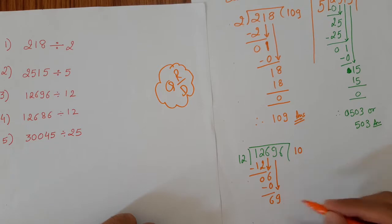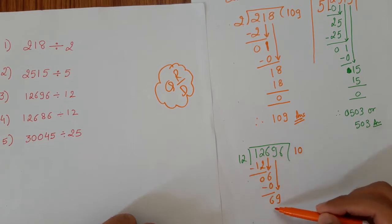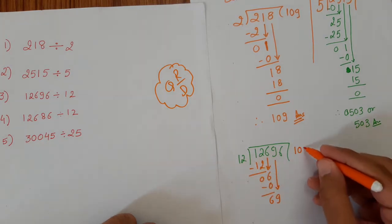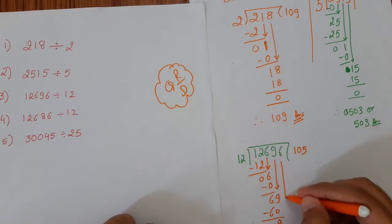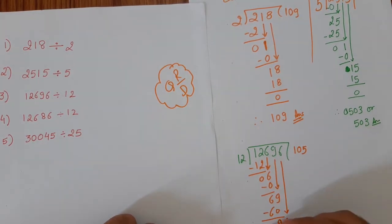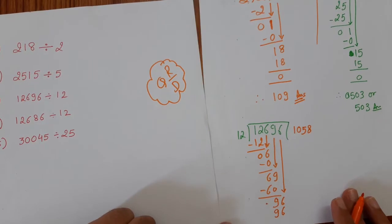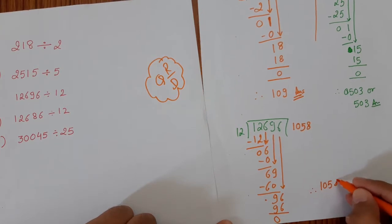We get 69. We have to read the table of 12 until we get 69 or less than that. So 12 times 5 is 60. We get 9. Take down 6. So 12 times 8 is 96. We get 0. So therefore the answer is 1058.